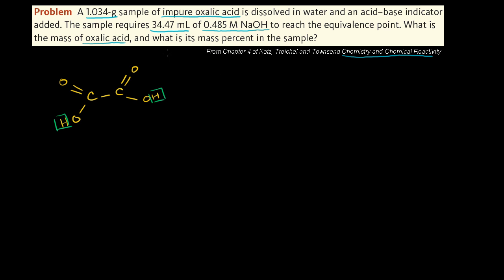Each molecule of sodium hydroxide, when dissolved in water, really just becomes hydroxide. Each hydroxide can nab one hydrogen proton. So for every one molecule of oxalic acid, you're going to need two hydroxides — one to nab this hydrogen proton, and then another one to nab that hydrogen proton.